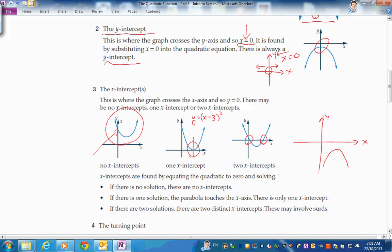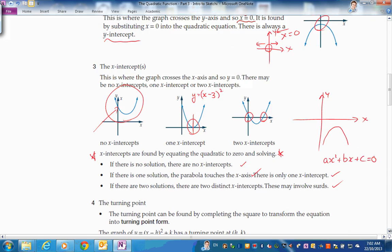Okay, x-intercepts are found by equating the quadratic to zero and solving. Okay, if you can. There may be no intercepts. If there is one solution, the parabola - remember that's the shape of the graph - touches the x-axis, there's only one x-intercept. Two solutions, there are two distinct intercepts. So what we're going to have to handle is taking the function in expanded form, perhaps, and finding when it's not. How would you do that? That's excitement for the future.